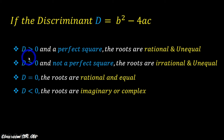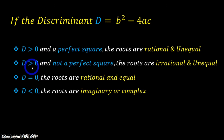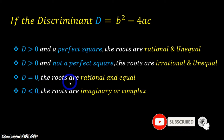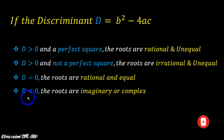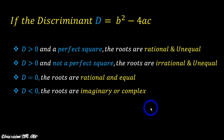If the discriminant is greater than 0 and a perfect square, then the roots are rational and unequal. If the discriminant is greater than 0 and not a perfect square, then the roots are irrational and unequal. If the discriminant is equal to 0, then the roots are rational and equal. If the discriminant is less than 0, then the roots are imaginary or complex.